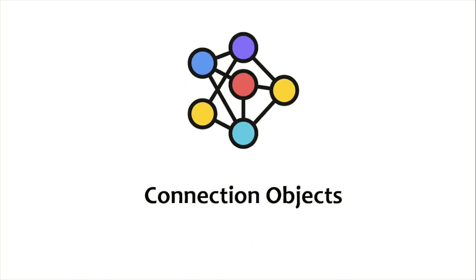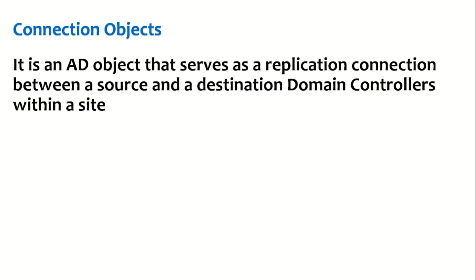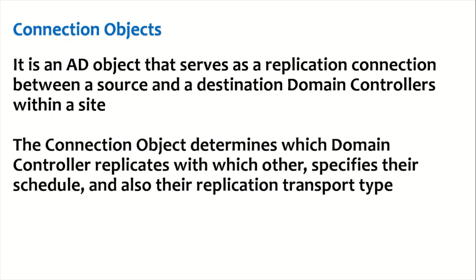Connection objects are active directory objects that serve as a replication connection between a source and destination domain controller within a site. Connection objects establish the connection between source and destination domain controllers and determine which domain controller replicates with which other domain controller, including the schedule. These connection objects define active directory replication partners in intra-site replication.